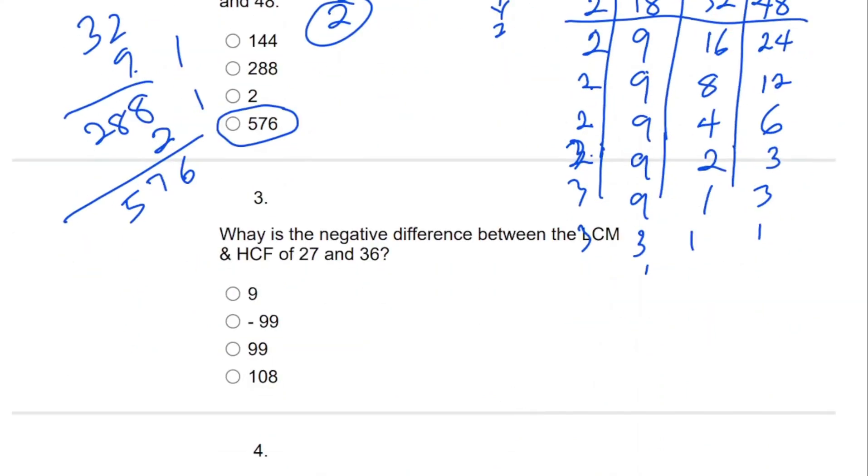Question 3: What is the negative difference between the LCM and HCF of 27 and 36? Negative difference means you subtract the bigger number from the smaller number. First we find the LCM and HCF. We have 27 and 36.